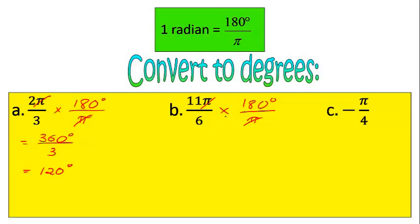And then what I would do is I would do some cross-cancelling here. So 6 goes into 6 once and 6 goes into 180 thirty times. So what I get is 11 times 30 degrees, which is 330 degrees over 1, so just 330 degrees.